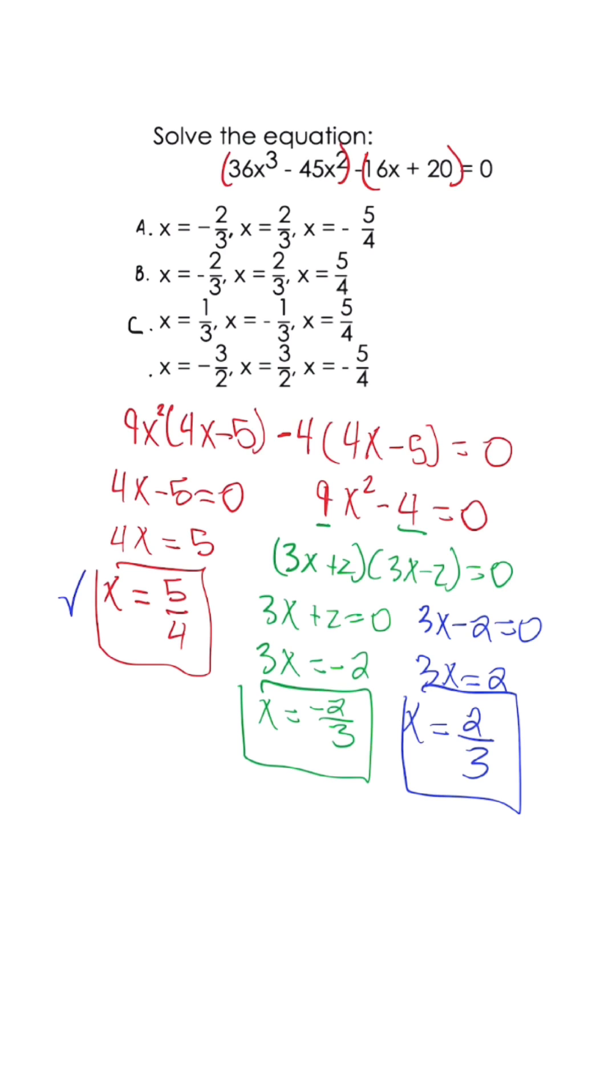Looking at our three zeros—5/4, negative 2/3, and positive 2/3—the answer for the polynomial equation is answer choice B.